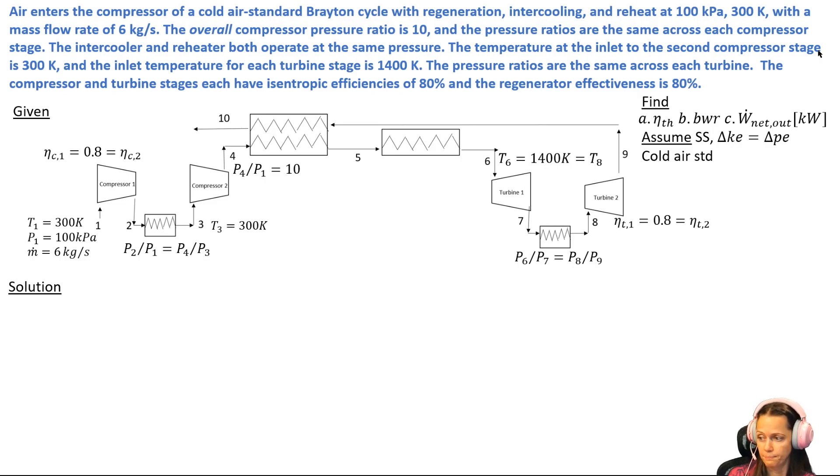They also tell us that the pressure ratios are the same across each compressor stage, so P2 over P1 is equal to P4 over P3.